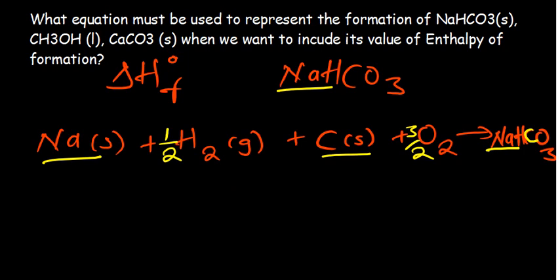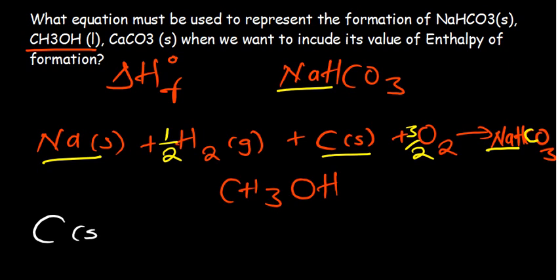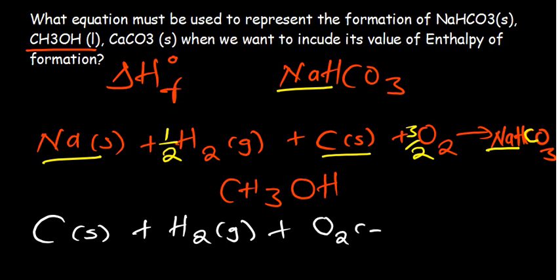You can pause the video to try the next one. We have CH₃OH — an alcohol. All the same approach: we start with the elements. We have carbon, which exists in solid state. Plus hydrogen, which exists diatomically as a gas. And oxygen, which also exists diatomically as a gas. On the other side, we expect to have the alcohol itself.